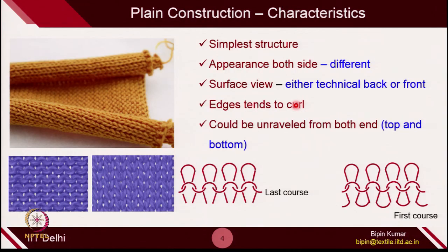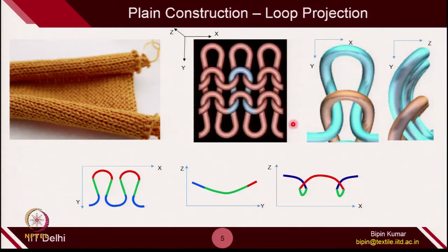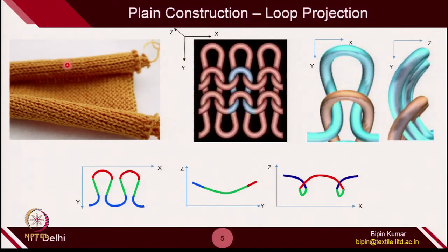The fabric curls from the edges, making it very difficult to maintain stability. This is why single jersey fabrics cause problems, especially at edges in garment making. In plain constructions, we also emphasize loop projection: the yarn is bent not only in the xy plane but also in the zx and zy planes. In the zy plane, each loop looks like an arc; in the zx plane, the projection is more complex but gives understanding of fabric mechanics and why curling occurs.